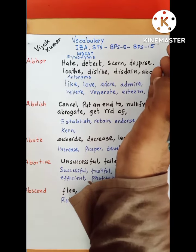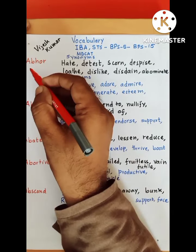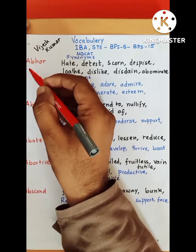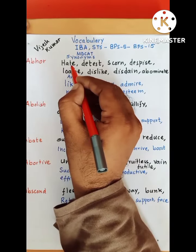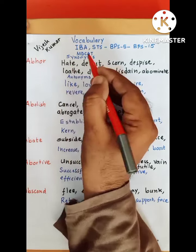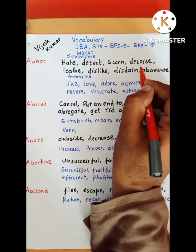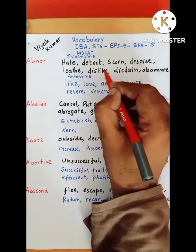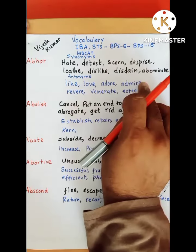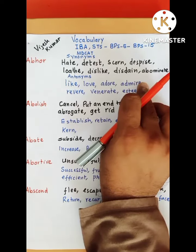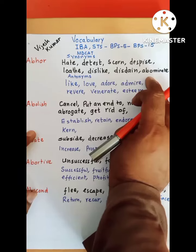Starting from the very first word, that is abhor. We spell abhor as A-B-H-O-R. Abhor is a negative connoted word. It means hate, nafirat karen, detest, scorn, despise, loathe, dislike, disdain, or abominate. These all are the synonyms of the word abhor.